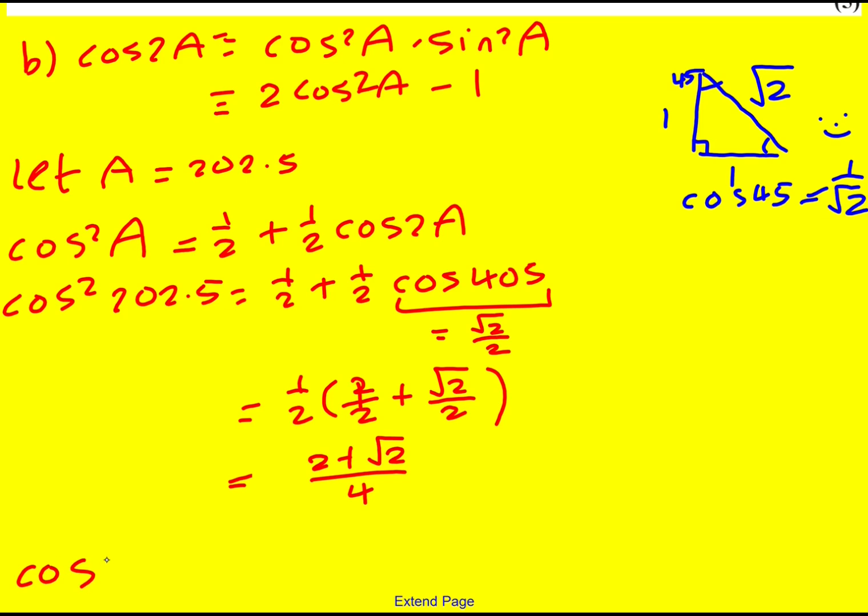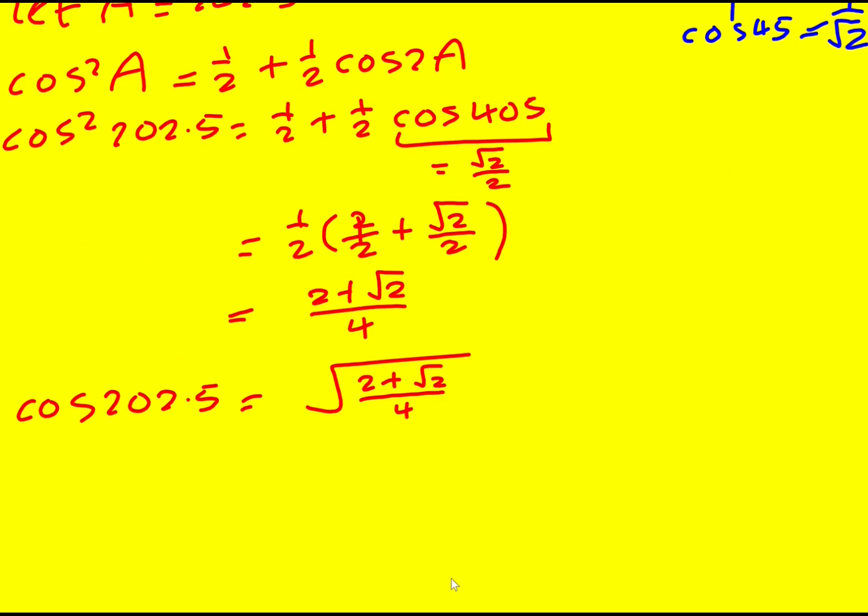Actually I want cos of 202.5°, so I need to take a square root, but just need to be careful here because I'm going to have plus or minus technically when I take the square root. Let's just take a look at the graph of cos. It looks like this. I'm going to be around here. It's definitely going to be negative. Cos 202.5° will be negative.